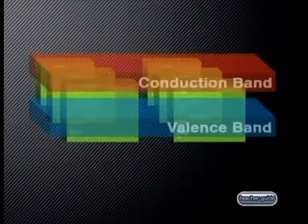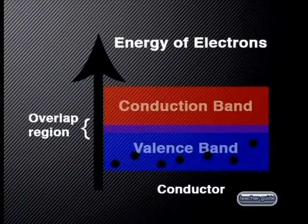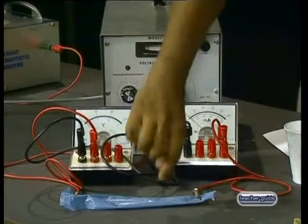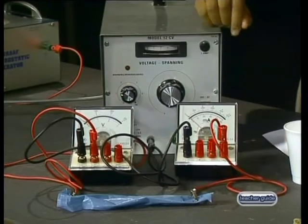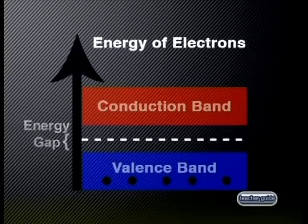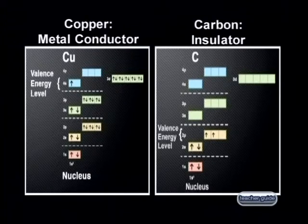The focus of this series is on Ohm's Law. We begin by reviewing Ohm's Law and carry out an experiment using different metal conductors. Once we have established the relationship between potential difference and current for conductors, we use energy band theory to explain our macroscopic observations. We apply the same experimental procedure to insulators and use energy band theory to explain why insulators do not allow charge to move.